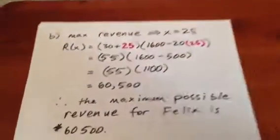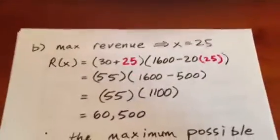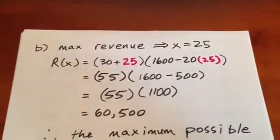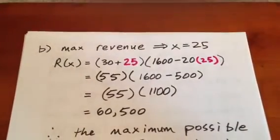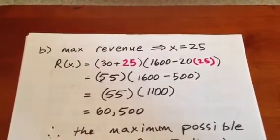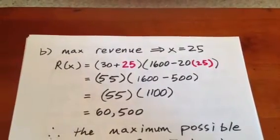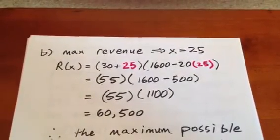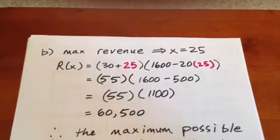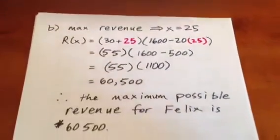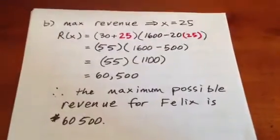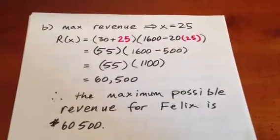We then move on to part B, and part B says what is the maximum revenue? Well, all we have to do is plug in an X value of 25. Our revenue is going to be 30 plus 25 times 1,600 minus 20 times 25, which is going to equal 60,500 when we evaluate it. So the maximum possible revenue for Felix in this case will be $60,500. Thank you so much.